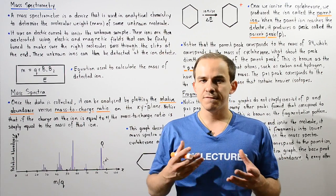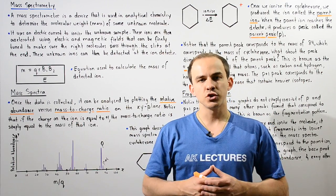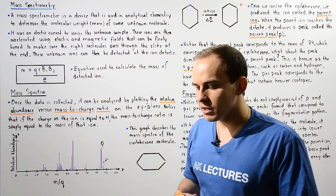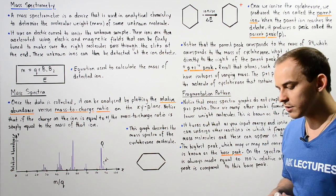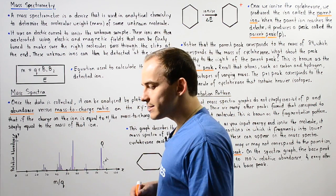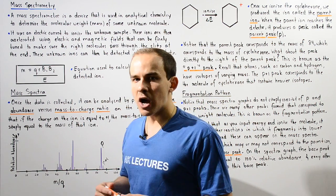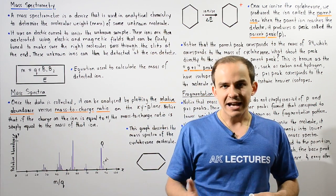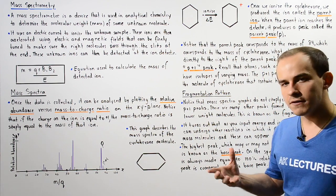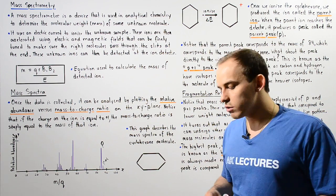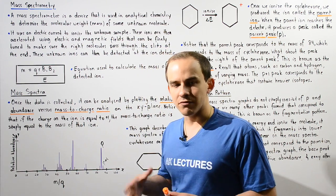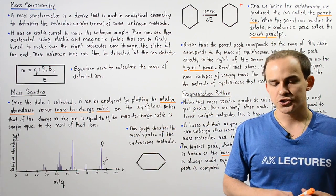Mass spectrometry is a field in chemistry that studies and analyzes molecules by using their molecular mass. An instrument known as the mass spectrometer allows us to calculate the mass of an unknown molecule, and it uses the principles of electric and magnetic fields.